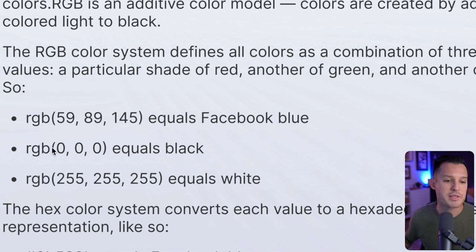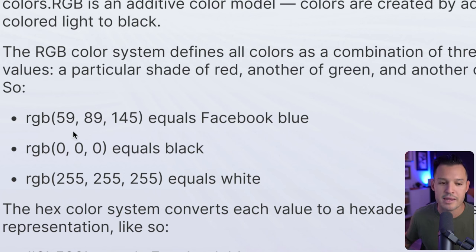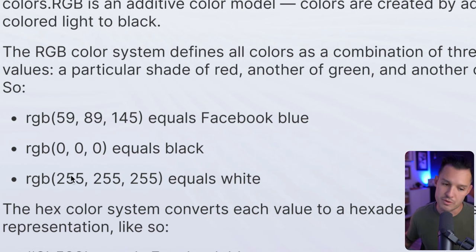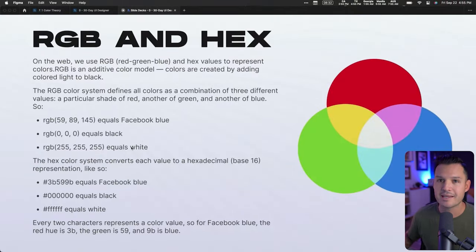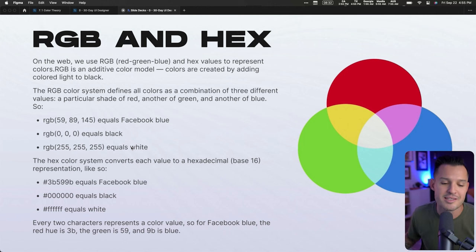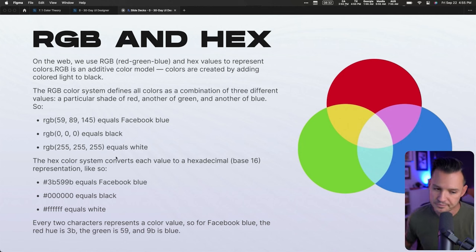RGB 0, 0, 0 equals black because we're not adding anything to those channels. RGB 255, 255, 255 equals white because we're adding everything — all of the light to each channel — and it comes out as pure white.